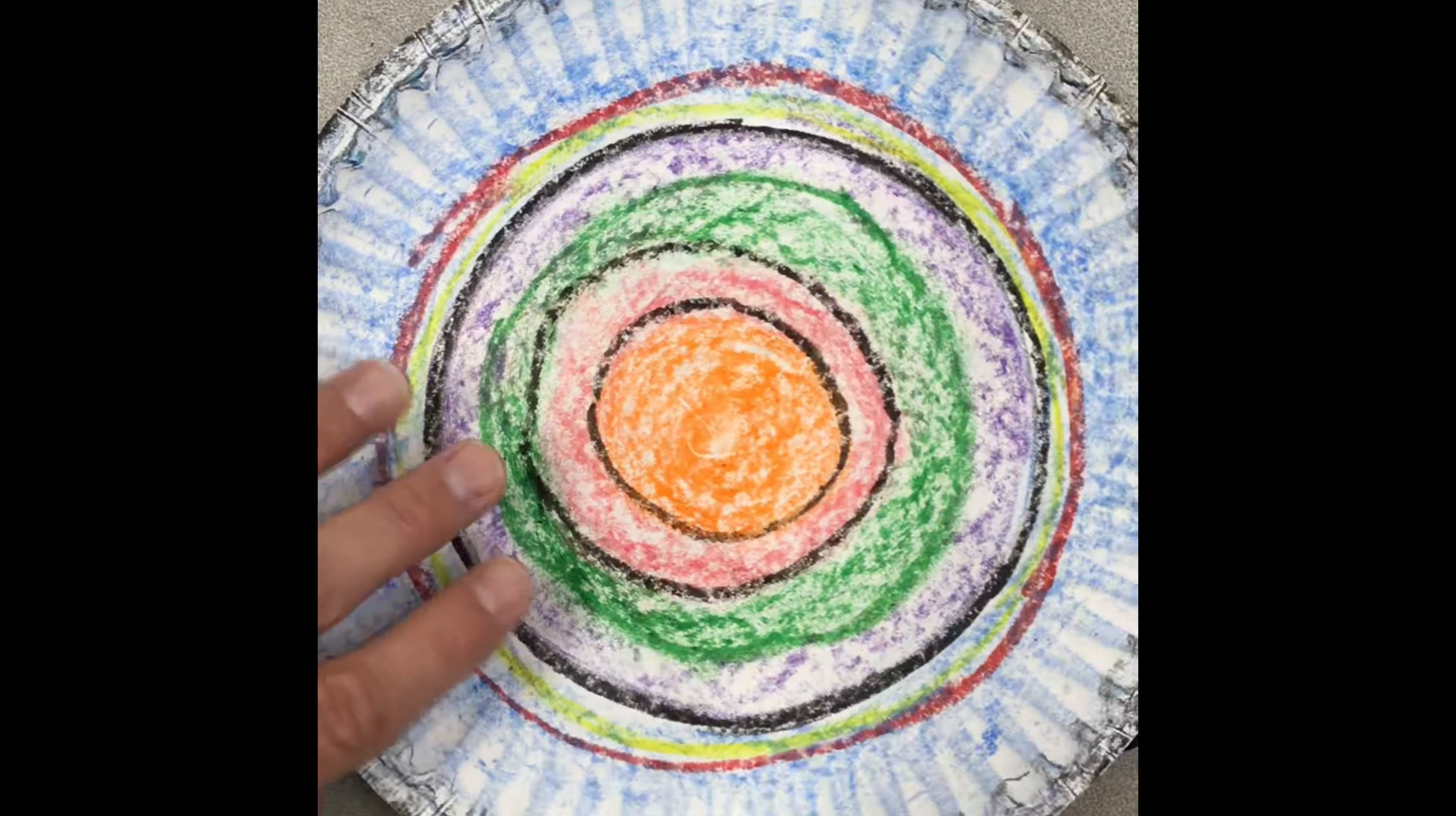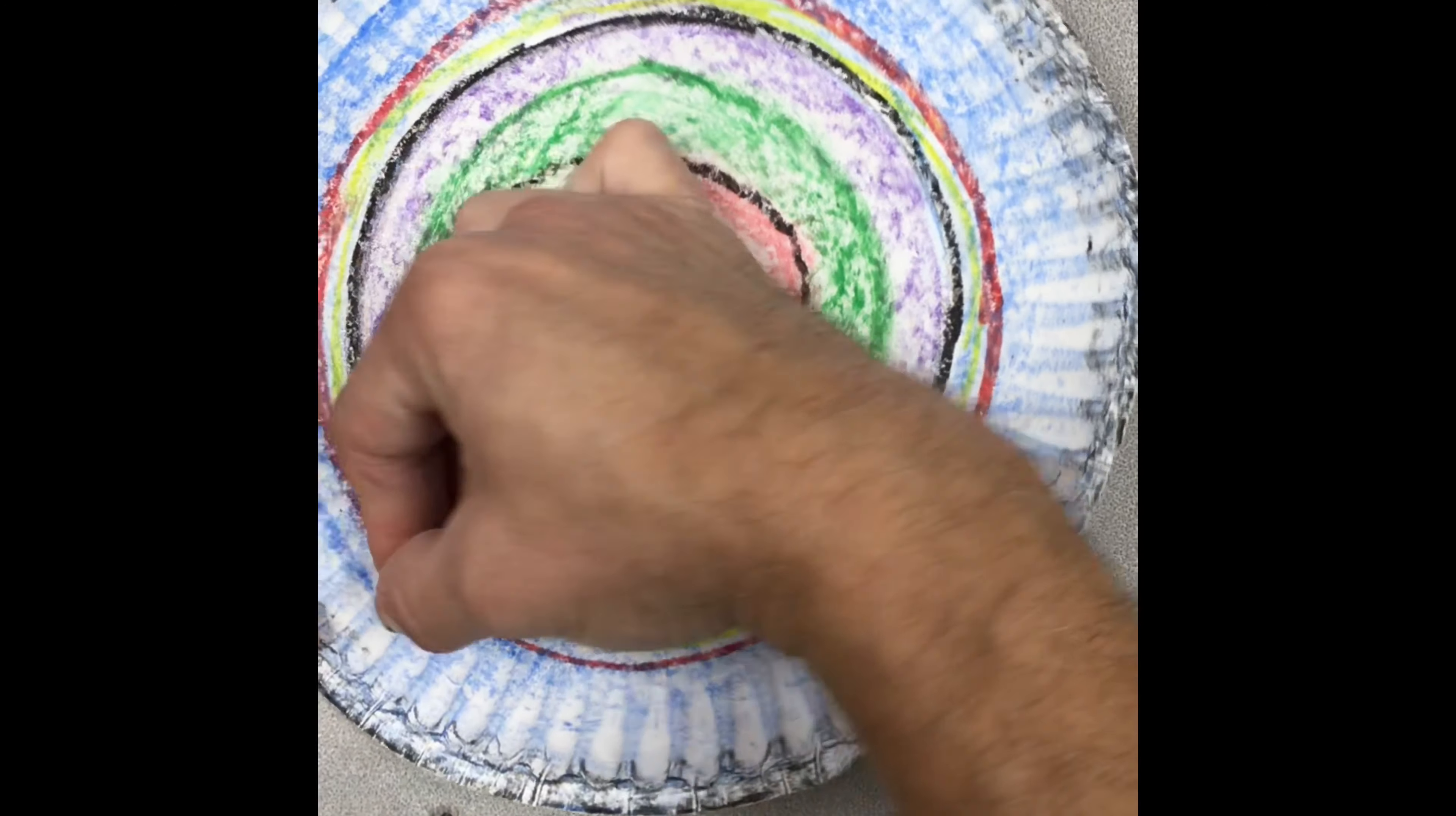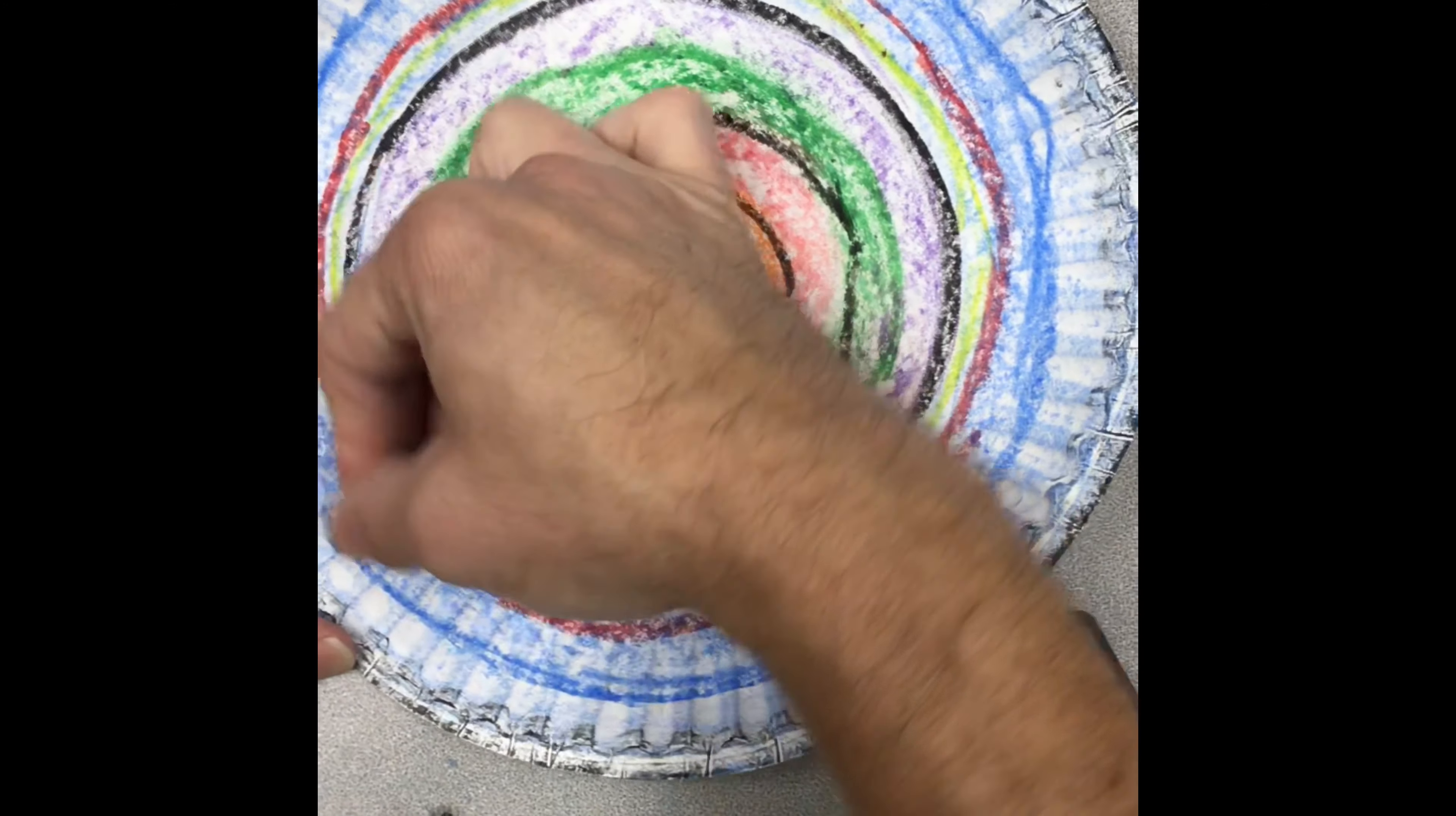So here you see I've added some yellow into my work. So I've got my circles done. Oh, sorry, I'm going to add one more. I'm going to add a blue circle there. So I'm going to add one more circle into my work using that curved line around the paper plate.